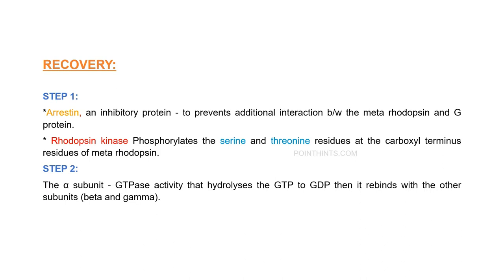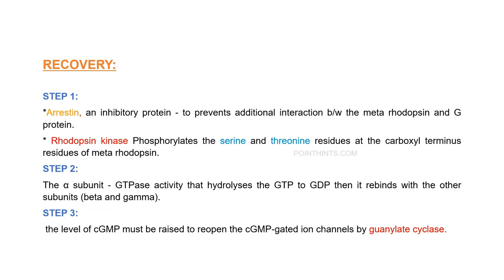Step 3: by increasing the cGMP level, we can also cause the cell to depolarize. If cGMP levels increase, it opens the ion channels, causing ion influx and depolarizing the cell membrane by activating the guanylate cyclase enzyme.